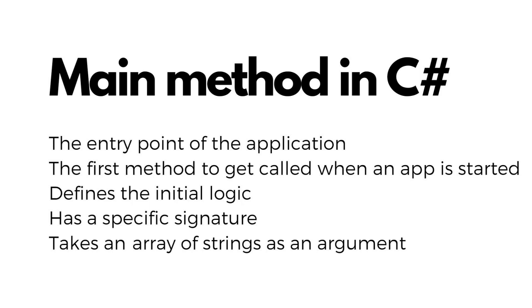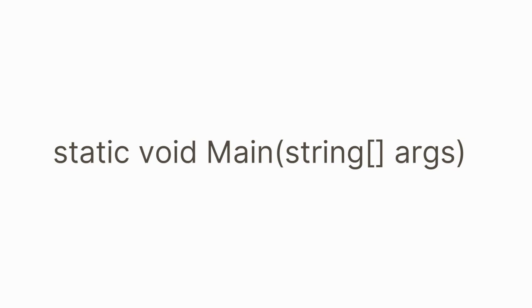It also has a specific signature and takes an array of strings as an argument. This is what the main method signature looks like. Let's break down this signature.